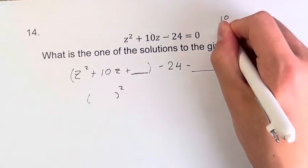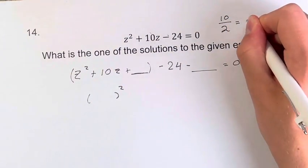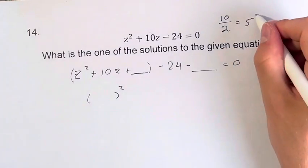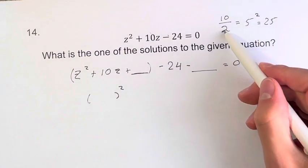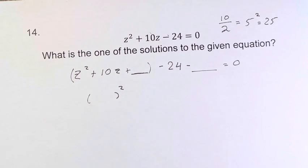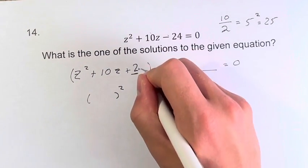...you divide it by 2, that gives us 5, and then you just have to square this to get 25. Divide it by 2, and then square it. This is going to give you 25.